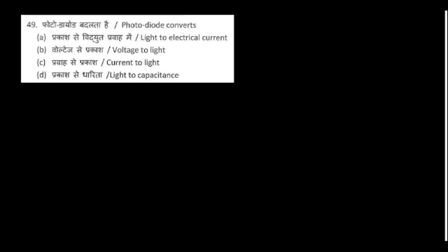Photodiode: a photodiode receives light and converts it into current — light to electrical current.